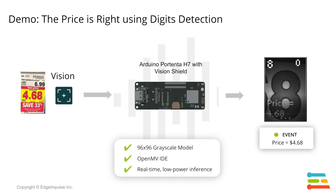The Arduino Portenta H7 employs a dual-core Cortex-M architecture where the computer vision model can run on the more capable Cortex-M7 core, while the Cortex-M4 core could be used to handle sensor fusion and provide the necessary triggers to activate the computer vision model when needed.